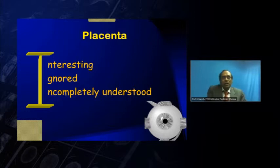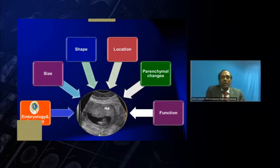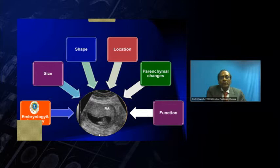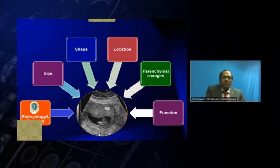For this lecture, I am not going to cover Doppler — rather I am going to look at the morphology of the placenta: location, size, and other things. If you look at the placenta as a whole, we need to know something about embryology, the size of the placenta, shape and shape problems, location, some pattern changes, and also some placental function. We will leave out placental function because that essentially involves looking at Doppler.